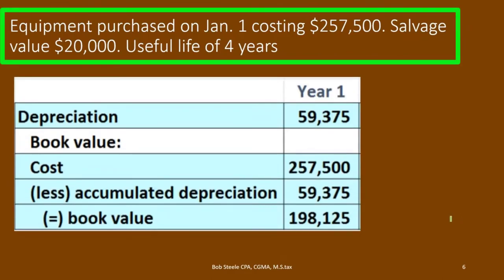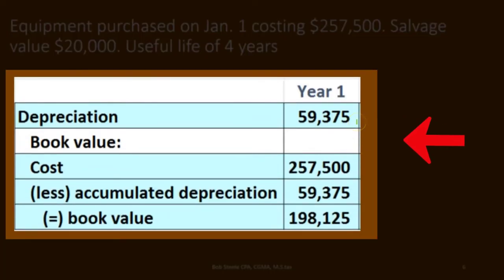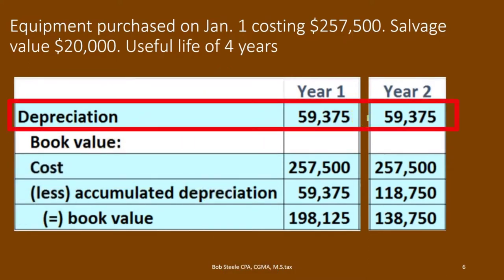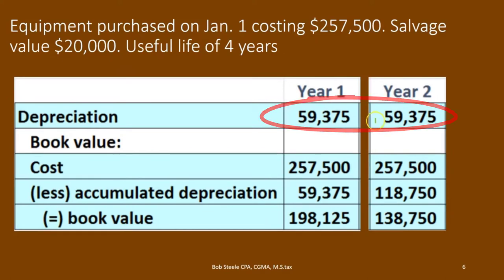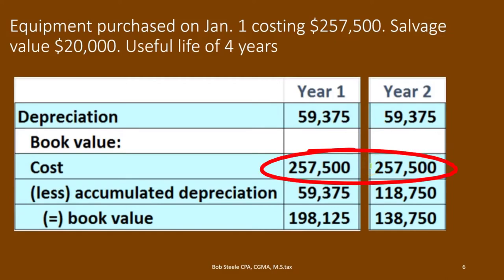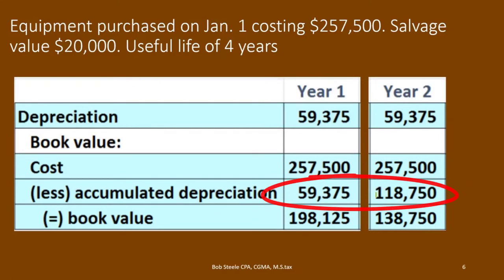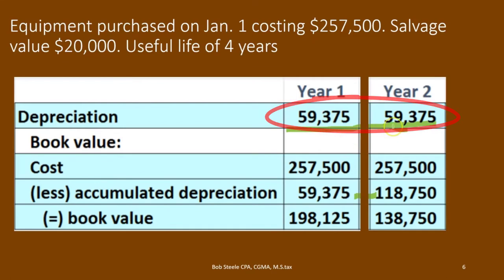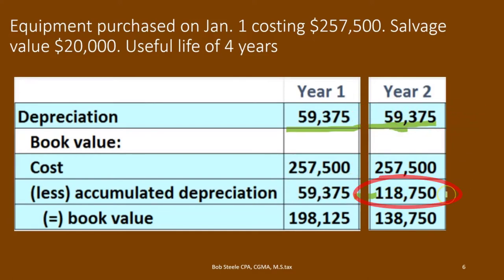For year two, we use the same table from year one. We don't need to recalculate — depreciation is the same for each of the four years at $59,375. The cost does not change; that's what we paid for it. The accumulated depreciation is the prior year's accumulated depreciation plus the current year's depreciation expense — so $59,375 plus $59,375 gives us $118,750. Subtracting from the cost of $257,500 gives a book value of $138,750.